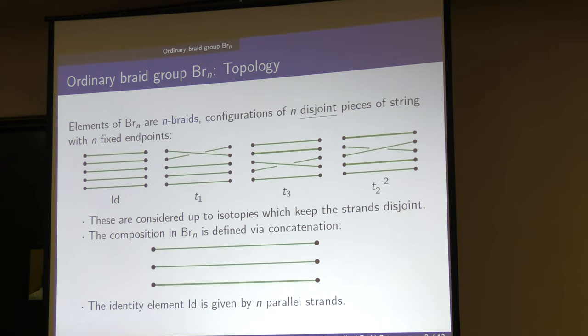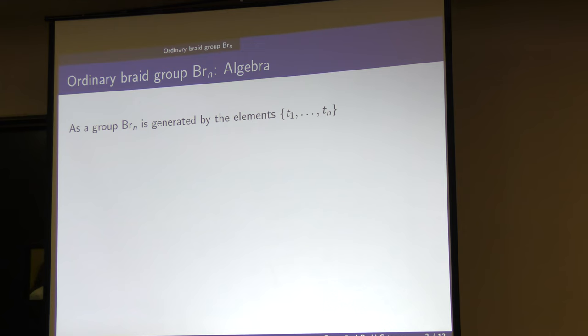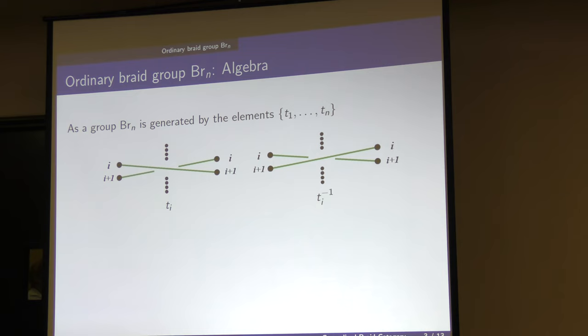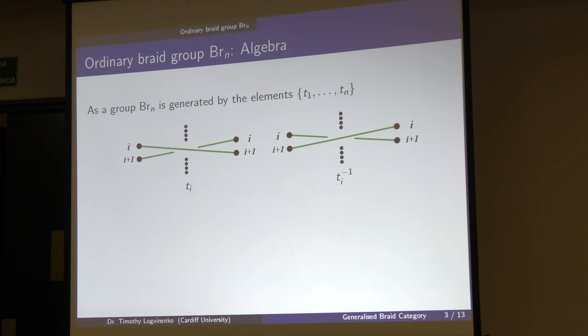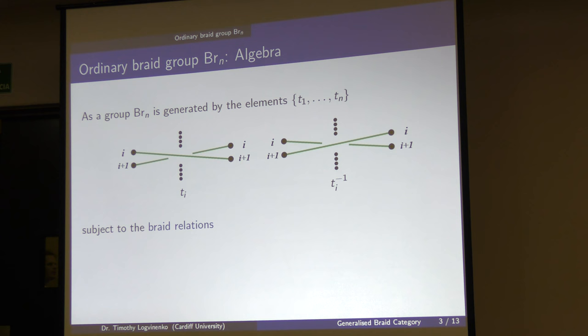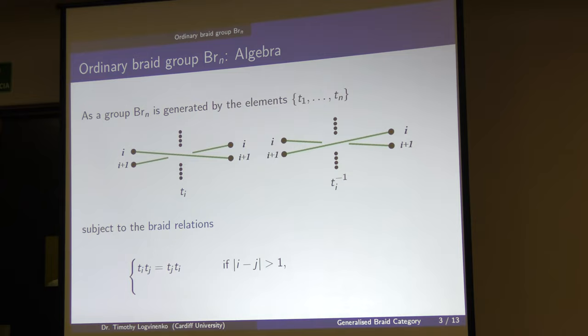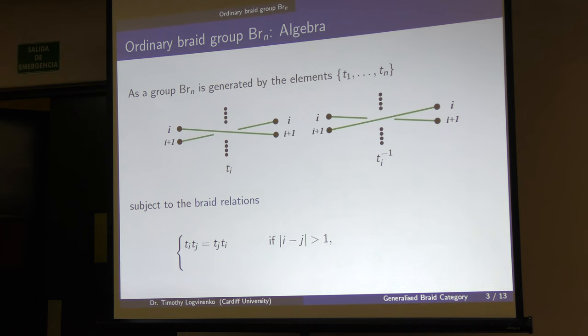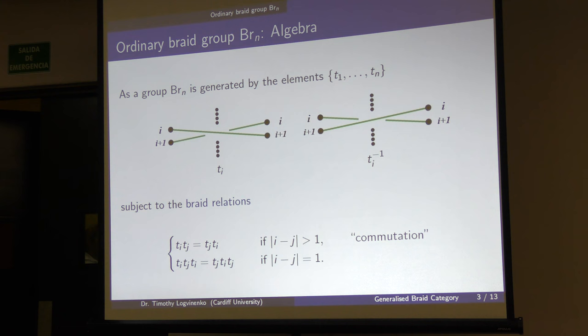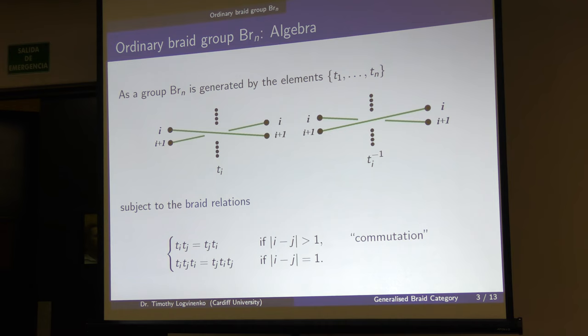You can also view it purely algebraically. We have a group generated by N generators, where generator T_i and its inverse correspond to crossings one way and the other. These are subject to the well-known braid relations. If two crossings happen far apart — if the indices are more than one apart — then they just commute. This is the so-called commutation condition. And if you look at how adjacent crossings interact, you have the braiding condition: T_i T_j T_i = T_j T_i T_j.